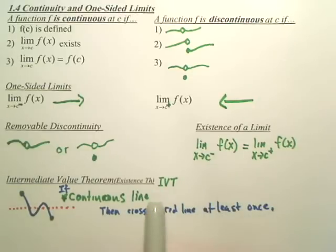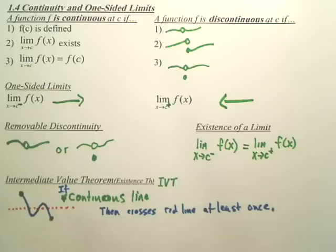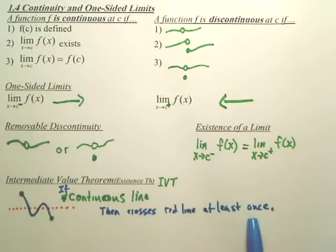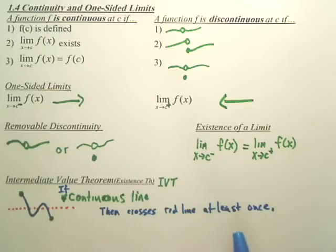If it's a continuous line from A to B, then it will cross this red line, whatever red line is given, whatever line is given, at least once. It could cross more. It's just proving there's an existence of a point somewhere between these two points that will cross that line. It can cross more than twice. It can cross more than once.